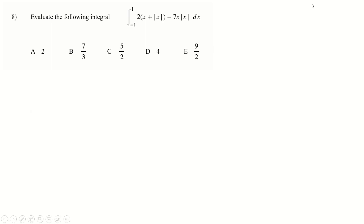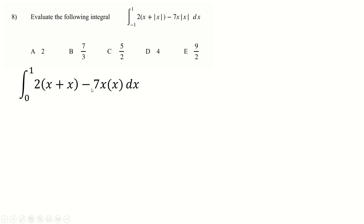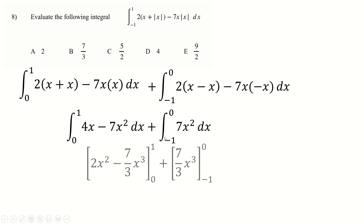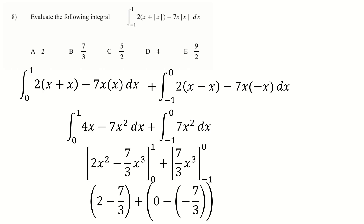Same deal here — we are not going to integrate a mod function. We're going to separate the integrals into the positive part, where the mod does nothing (mod of 0.1 is still 0.1), and add in the other half. In the negative part, mod times by minus one to make it positive, so we replace x with minus x. That simplifies to this. These integrals are not over the same bounds, so we can't combine them, but we just integrate and put the numbers in. Some stuff cancels and we end up with 2 as our answer.